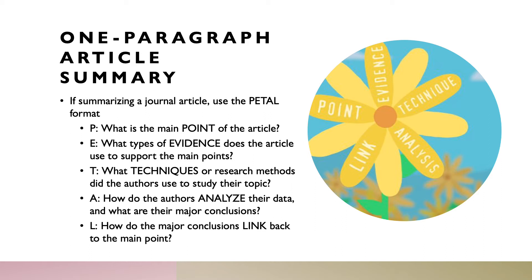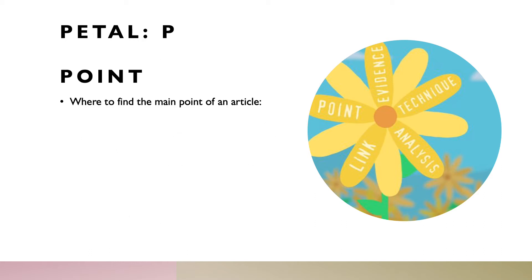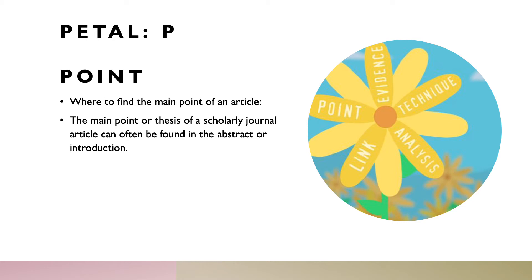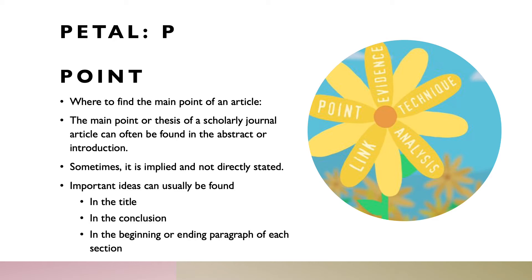Let's take each element in more detail. The Point: where do you find the main point of a journal article? Typically in a scholarly journal article, you can find the main point or thesis either in the abstract or the introduction. Sometimes it is implied and not directly stated. In that case, you have to look for clues — important ideas in the title, in the conclusion, or in the beginning or ending paragraph of each section. These are where authors tend to place their claims or conclusions. If you make a list of all the claims, you can infer the main point from those.